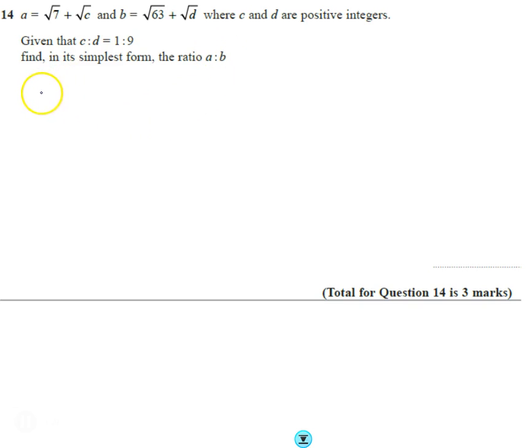So there's a couple of ways of doing it, there are several ways you can do it. If I look at B, that's the square root of 63 plus, it would be the square root of D, but actually, why don't I write it as the square root of C and see how this relates to this one.